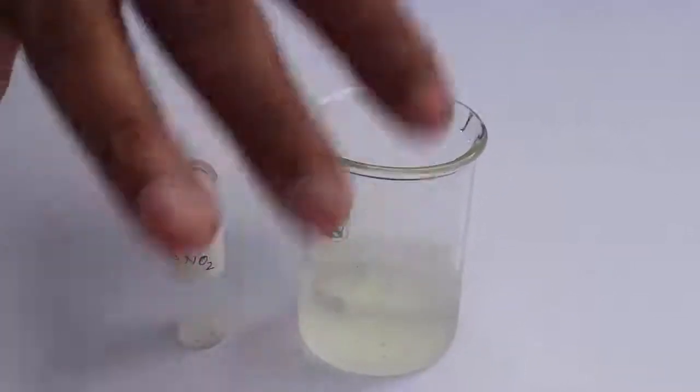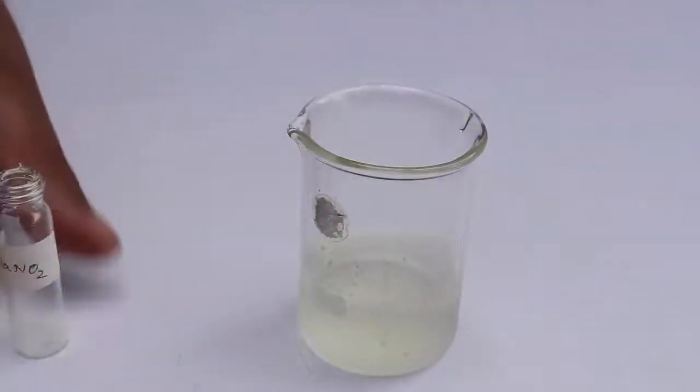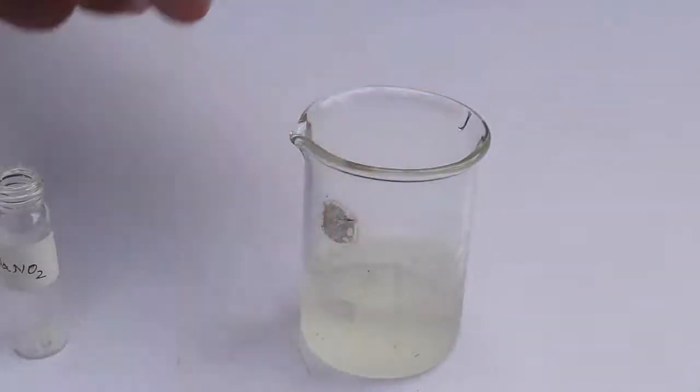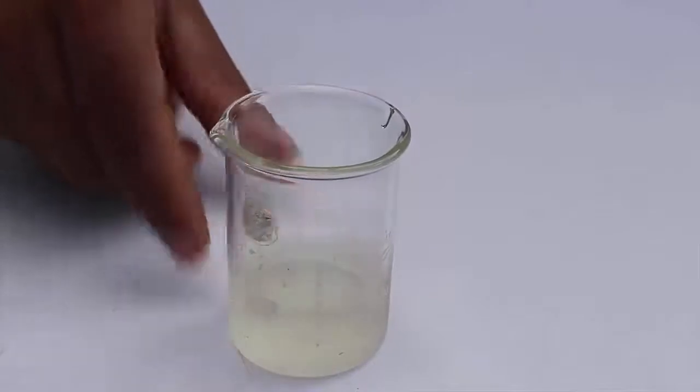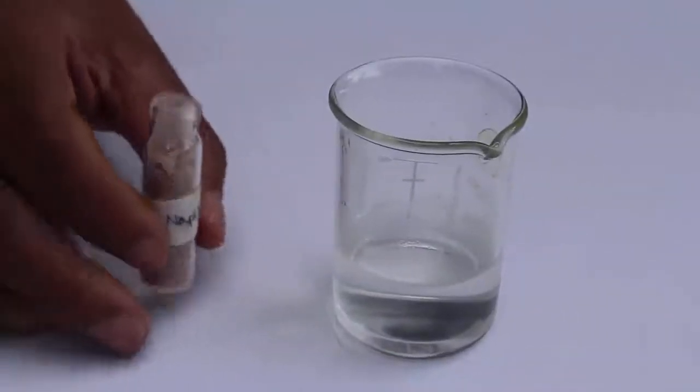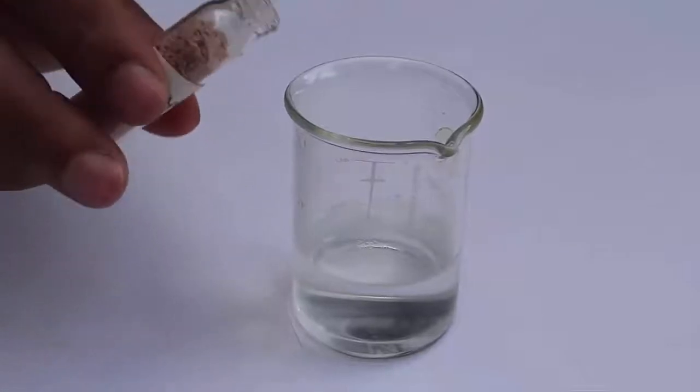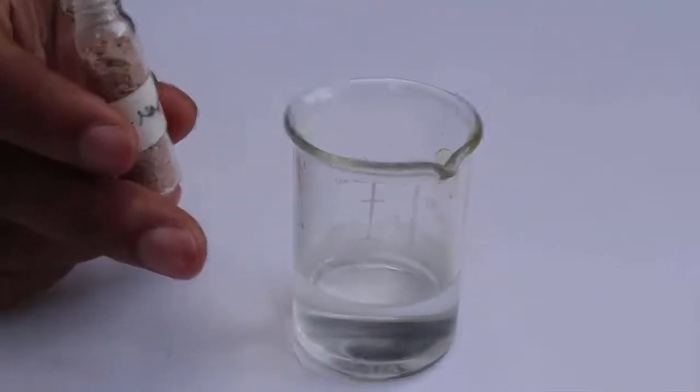Cool it down to less than 5 degrees centigrade by placing it in an ice bath. For the third solution, add 2-naphthol to the solution of sodium hydroxide or caustic soda.